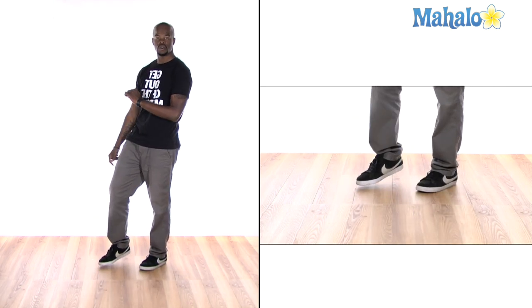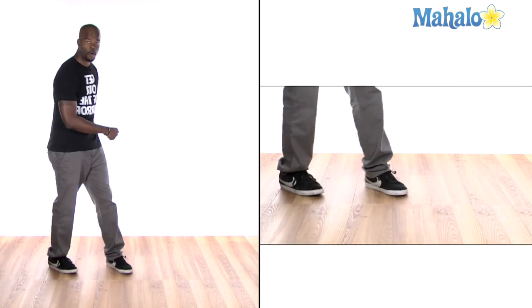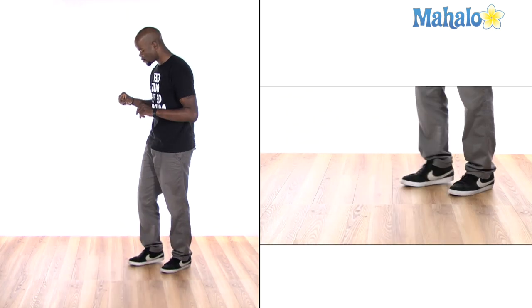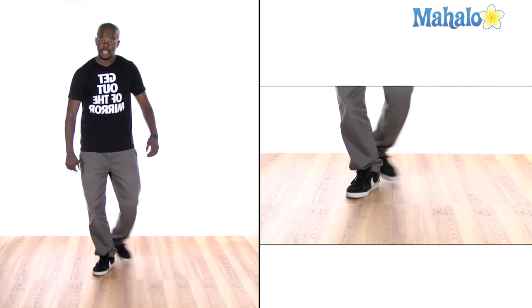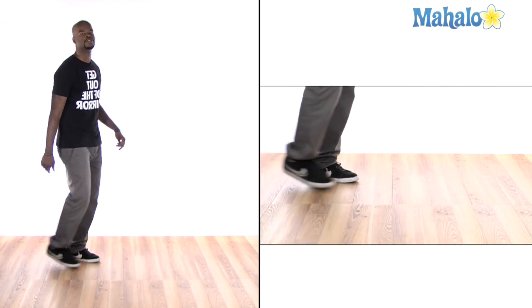Then you're going to go three and four. All right? So, from the first part, we have one, two, then three and four. All right? So, for your classically trained dancers, that is the Pas de Beret.